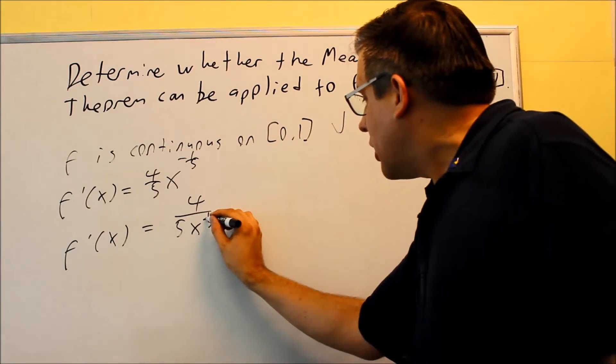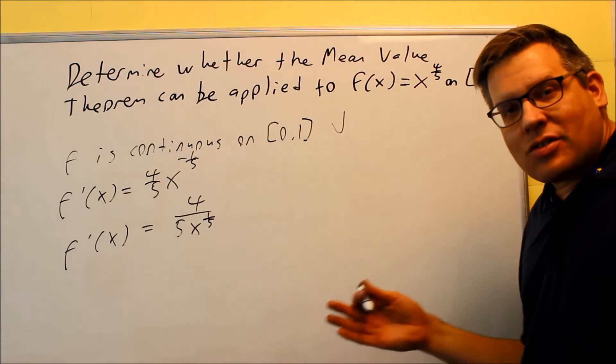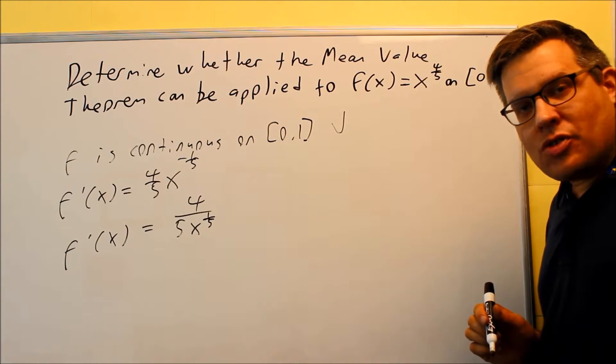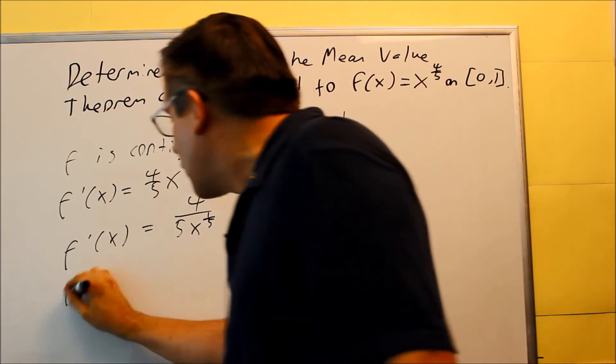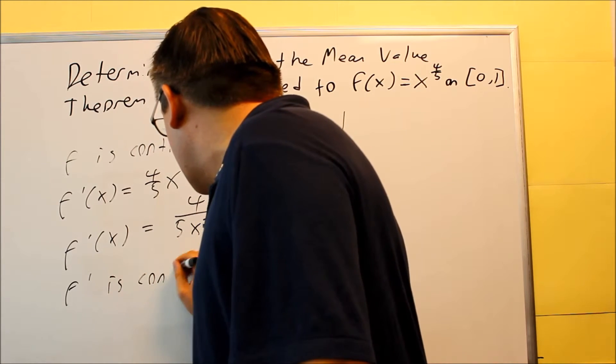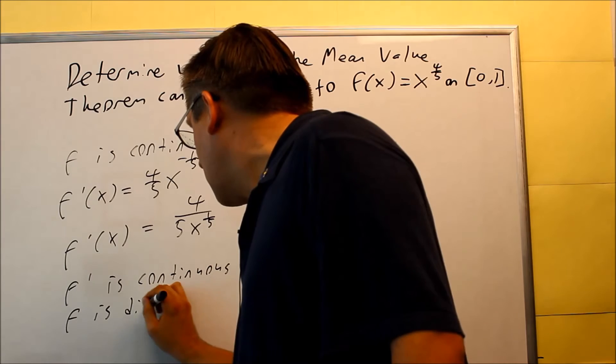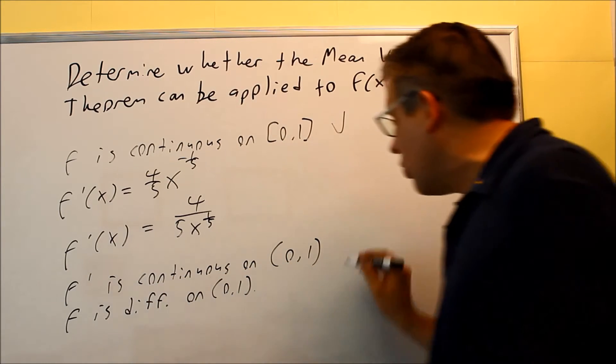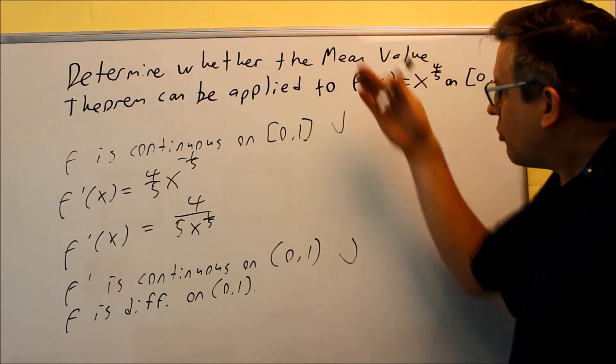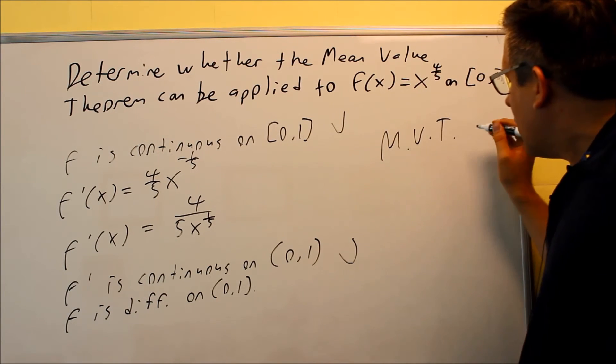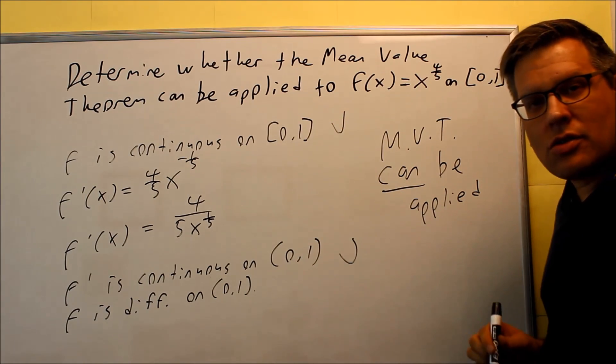I want to make sure that this is continuous on the open interval from 0 to 1. Now what's going to make this undefined right here? Well, if I put a 0 down there, that's going to make this function undefined, which means we can say that this is not differentiable at x equals 0. However, when we look at the conditions, we're saying that f' is continuous on the open interval from 0 to 1, which means that f is differentiable on (0, 1). So that right there, that's the second check. So both those conditions are satisfied, which means to determine whether mean value can be applied, we're going to say that mean value theorem can be applied in this situation because again, these two conditions have been met.